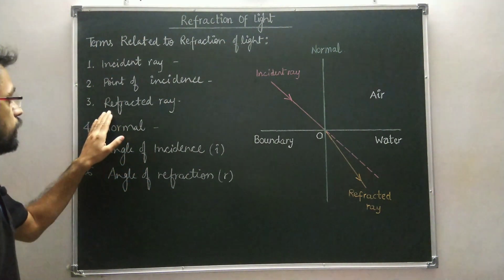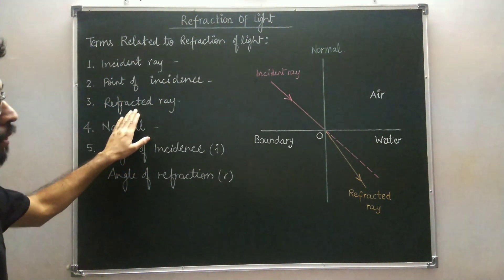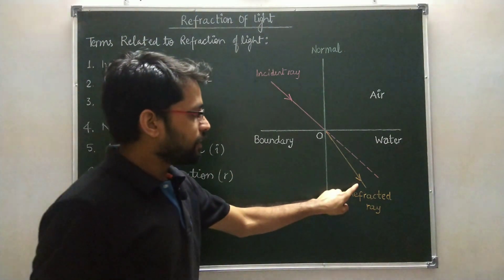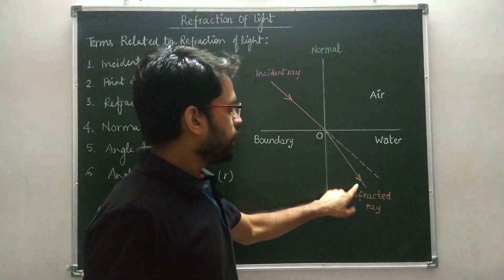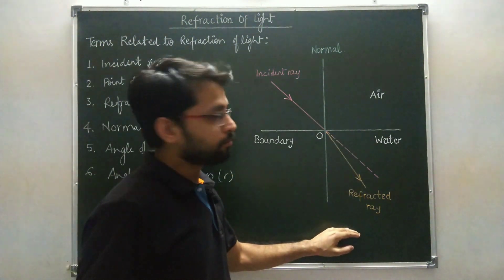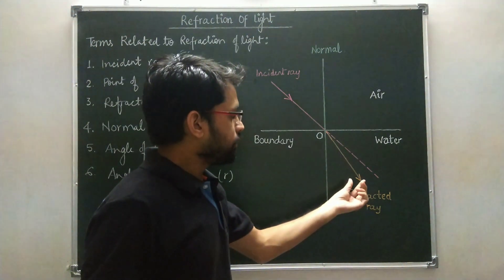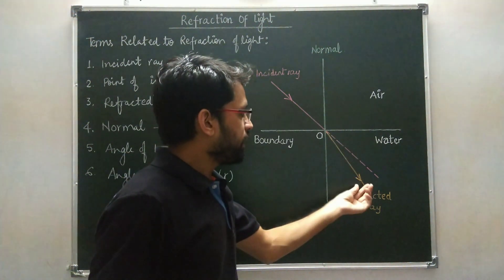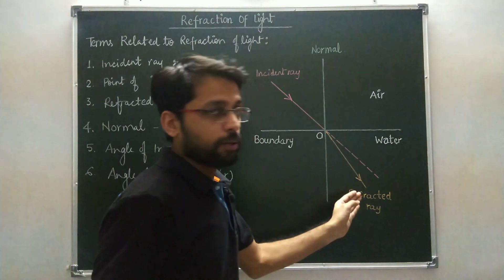The third term is refracted ray. Refracted ray is the light ray in the second medium, and the direction of the refracted ray is away from the boundary.